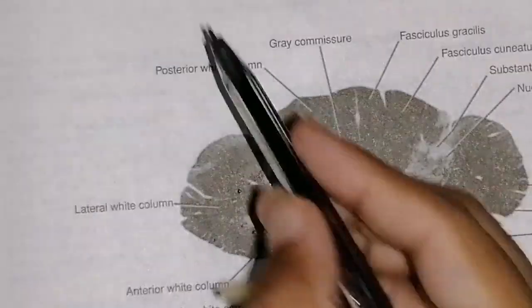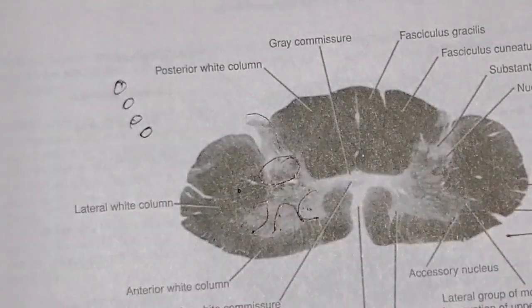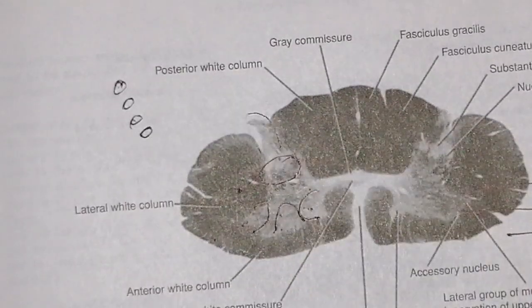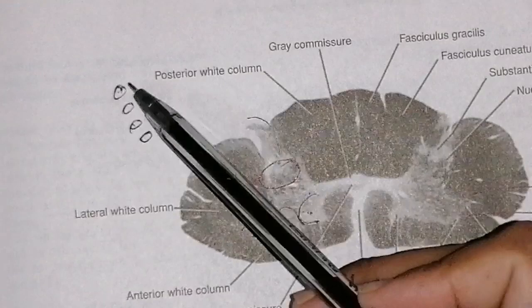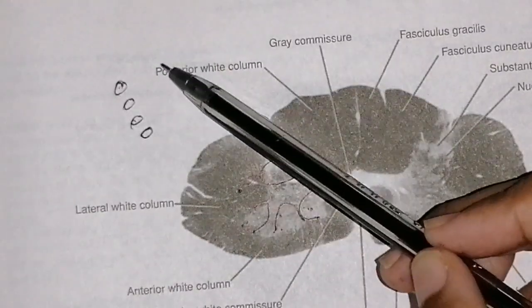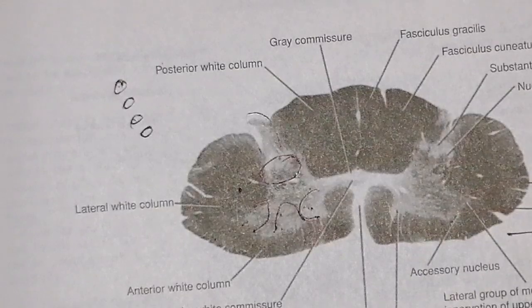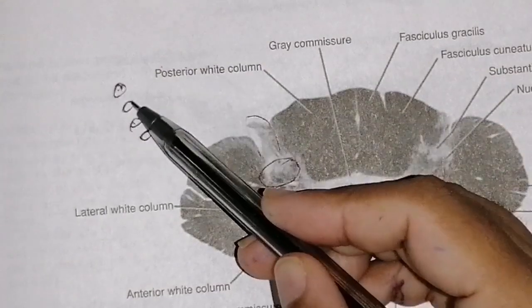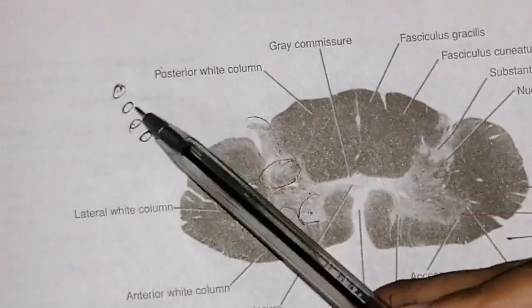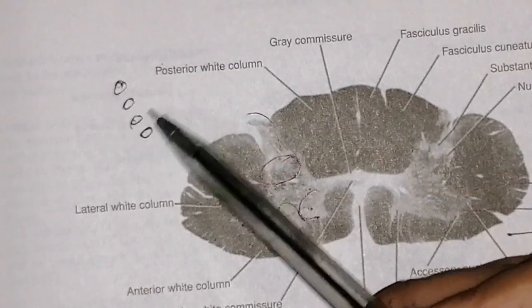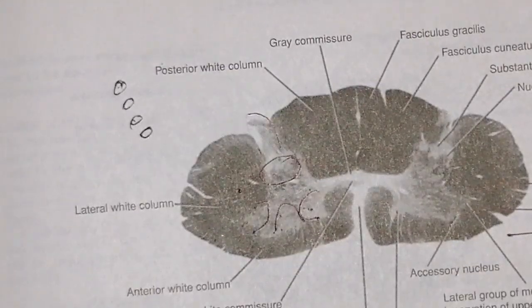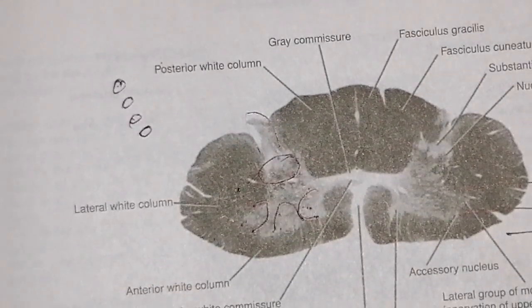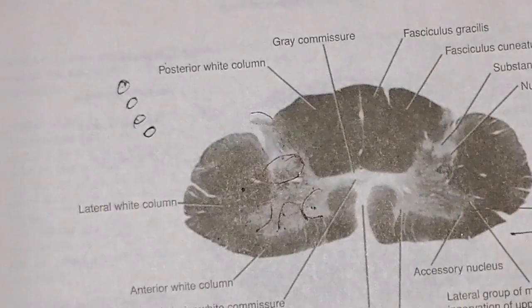Regarding the posterior gray matter, there are four nuclei. Substantia gelatinosa has Golgi type 2 neurons and deals with pain, temperature, and touch. Nucleus proprius forms the main bulk and receives position, movement, and vibration sensations. Nucleus dorsalis senses proprioceptive information from neuromuscular spindle fibers and locomotory movements. The fourth nucleus receives visceral afferent information.